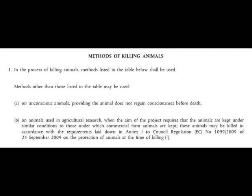Methods other than those listed in the table may be used — these are exemptions — on: A: an unconscious animal, providing the animal does not regain consciousness before death; and B: on animals used in agriculture research when the aim of the project requires that the animals are kept under similar conditions to those under which commercial farm animals are kept. These animals may be killed in accordance with the requirements laid down in Annex 1 to the Council Regulation EC — that's probably to do with killing animals in agriculture.